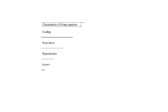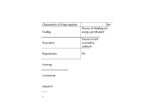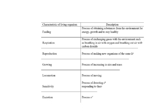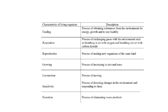Let us now look at a summary of the characteristics of living organisms. Feeding: the process of obtaining substances from the environment for energy, growth, and to stay healthy. Respiration: process of exchanging gases with the environment, such as breathing in air with oxygen and breathing out air with carbon dioxide. Reproduction: process of making new organisms of the same kind. Growing: process of increasing in size and mass. Locomotion: process of moving. Sensitivity: process of detecting changes in the environment and responding to them. Excretion: process of eliminating waste products.